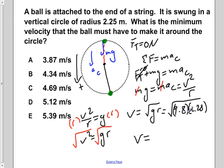We would find after the multiplication and the square root that our velocity is approximately equal to 4.69 meters per second.